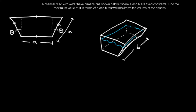So how would we solve this problem? It's just like any other optimization problem where we want to have a constraint equation and an optimization equation. What we would be optimizing is the volume of the shape. To get the volume, we take the face — which is the trapezoid cross-section highlighted in red — times however far we're going.